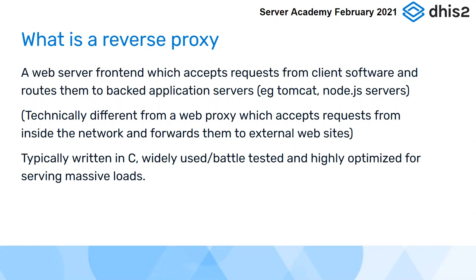Proxy software is battle-tested and highly optimized for serving very massive loads. Generally speaking, when it comes to performance problems you might find with DHIS2, the problem is almost never going to be the proxy. You get big arguments about 'this proxy can serve a million requests per second and this one can only serve 50,000,' but generally those figures are much higher than anything we see. The kind of software we use for proxies is generally more than adequate for the loads we have.